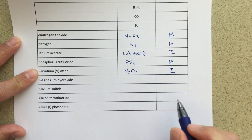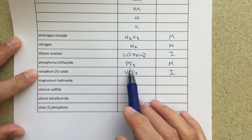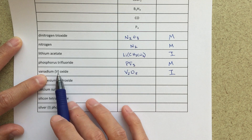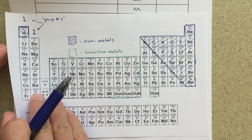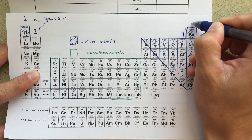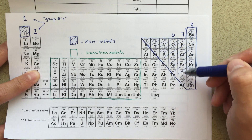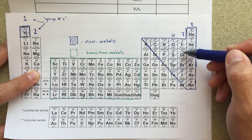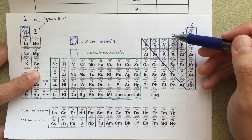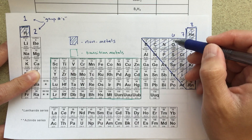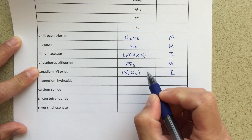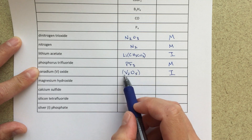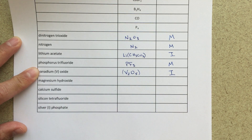The formula is V2O5. This is an ionic compound — a metal plus a non-metal. Each vanadium has a plus five charge and each oxygen has a minus two charge. Going back to the periodic table: things in group six always have a minus two charge in an ionic compound; things in group seven always have a minus one charge. So I need two vanadiums (plus ten overall positive charge) and five oxygens (minus ten overall negative charge), giving a neutral compound.